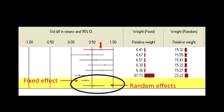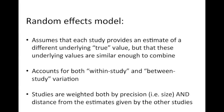Note that the confidence interval is narrower when a fixed effect model is used and is much wider when a random effects model is used. A random effects model assumes that each study provides an estimate of a different underlying true value, but that these underlying values are similar enough to combine. It accounts for both within study and between study variation. Studies are weighted both by precision, i.e. size, and distance from the estimates given by the other studies. A random effects model should be used when there is significant clinical or methodological heterogeneity between studies.